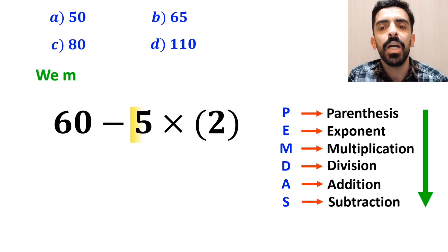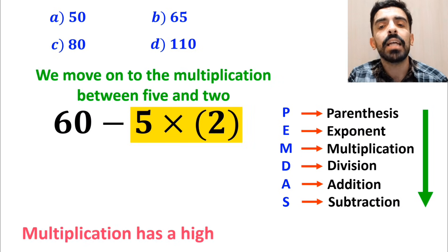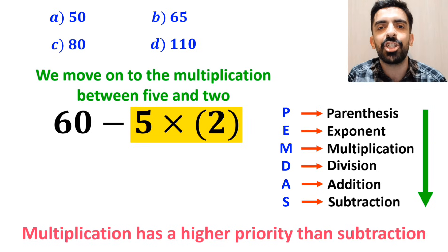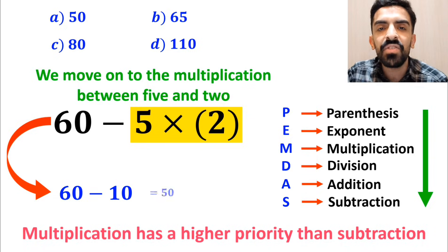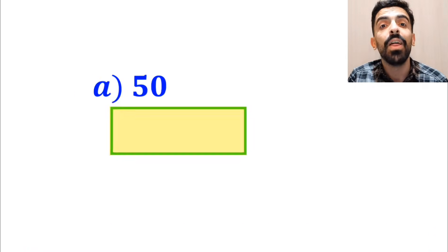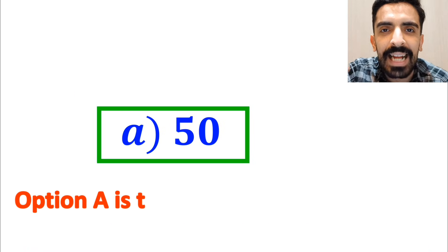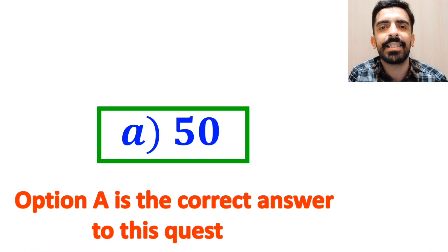In the next step we move on to the multiplication between 5 and 2, because multiplication has a higher priority than subtraction. So we rewrite this expression as 60 minus 10, which finally gives us the answer 50. Therefore option A is the correct answer to this question.